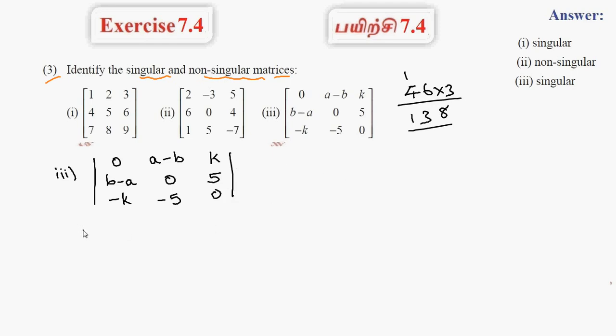Expansion: first element 0 into anything is 0. That is minus of a minus b into 0 plus 5k, plus k into minus 5b plus 5a. Total: